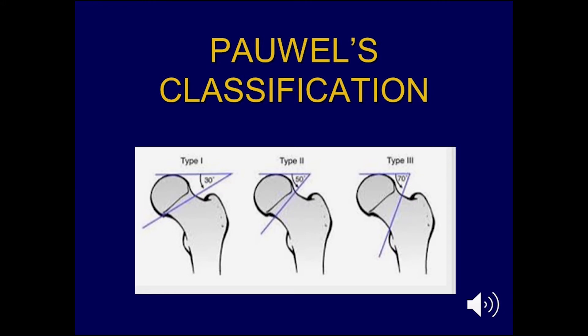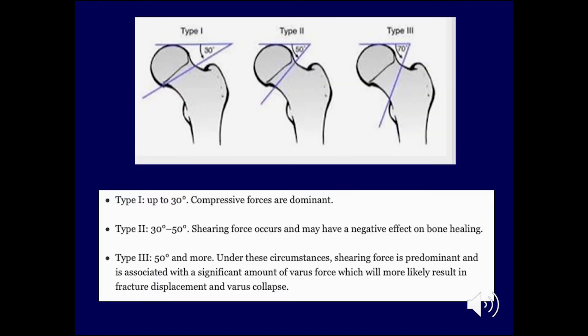Another very useful classification is the Pauwels classification, which depends on the inclination or angle of the fracture. Type 1 is the most horizontal, with angulation up to 30 degrees, where compressive forces are dominant. Type 2 has inclination around 30 to 50 degrees with shearing forces occurring, which may have a negative effect on bone healing. Type 3 is 50 degrees or more; shearing force is quite predominant and is associated with a significant varus force, likely resulting in fracture displacement and varus collapse.